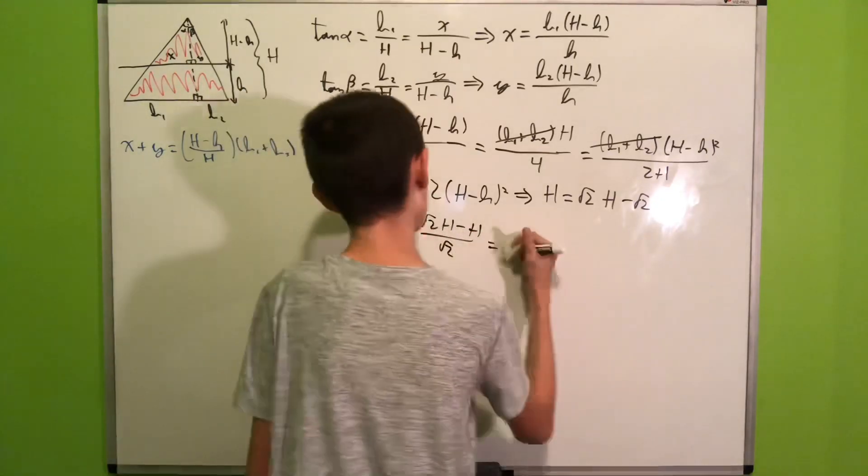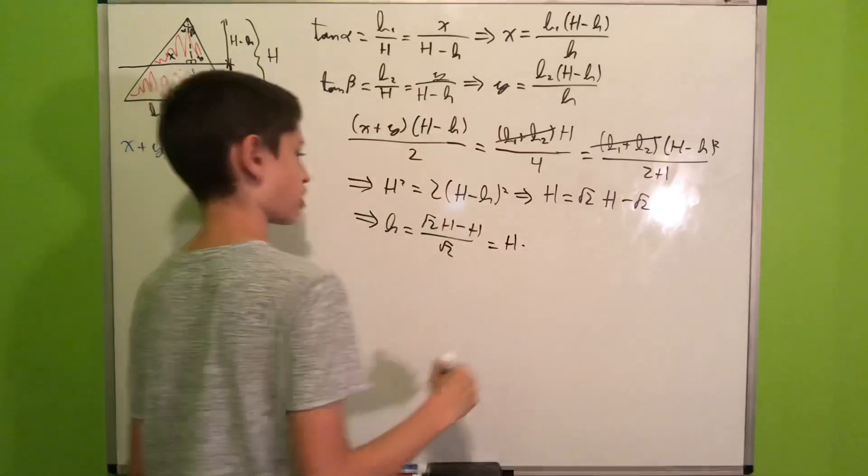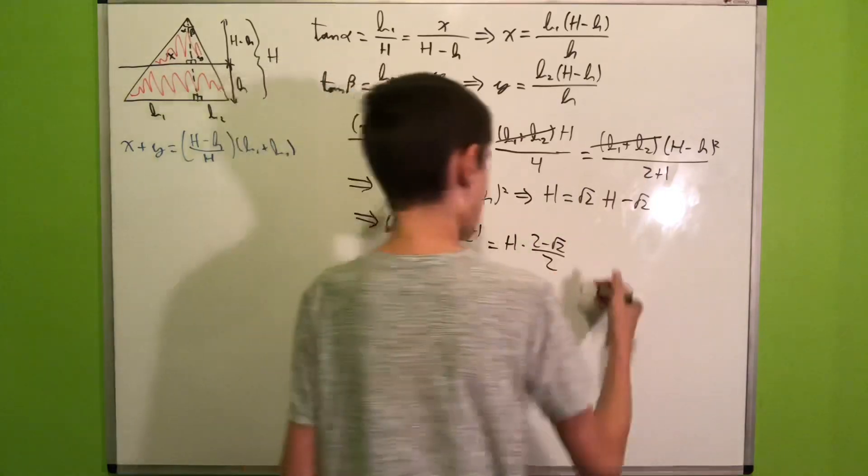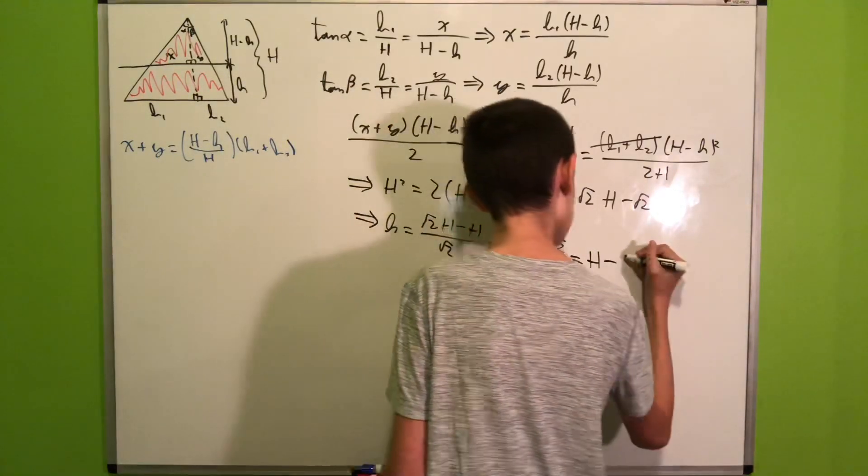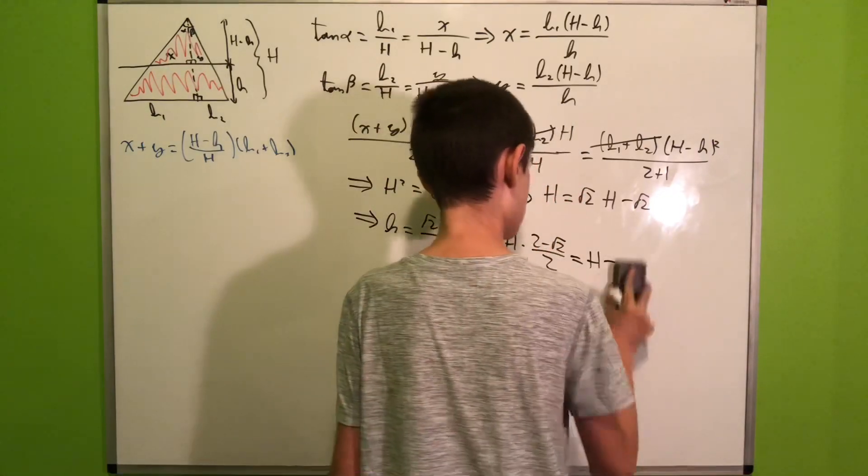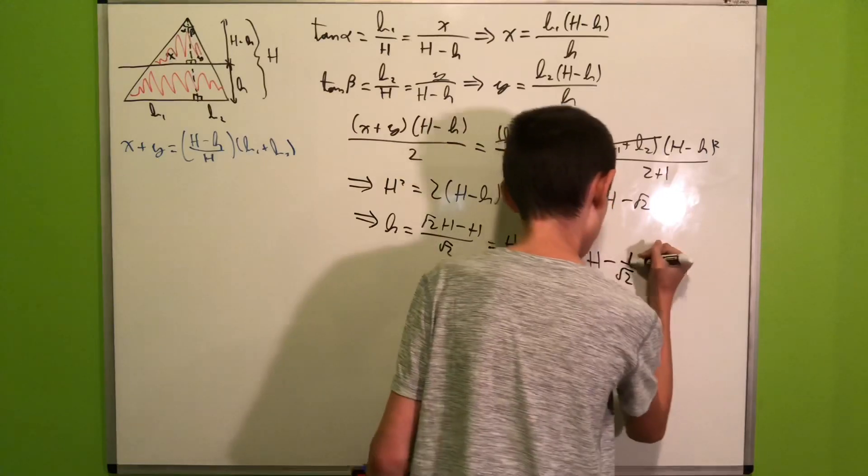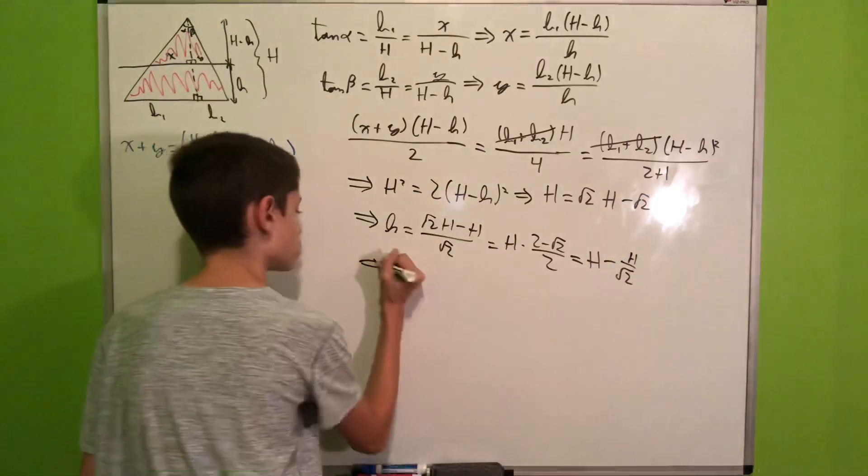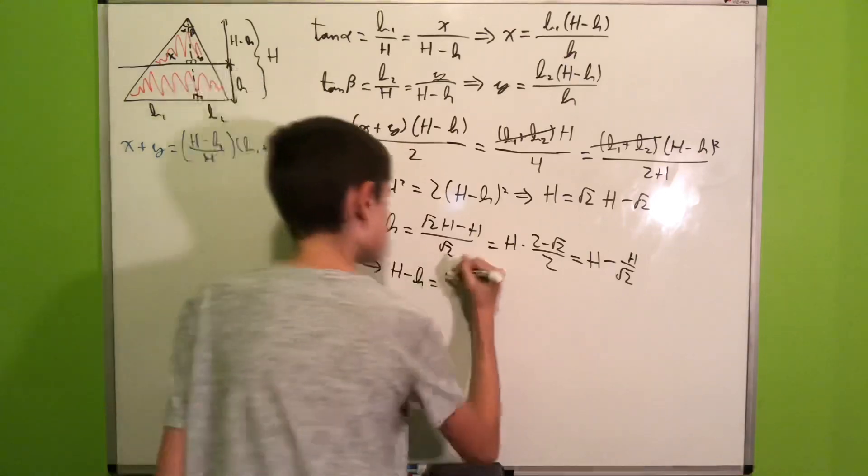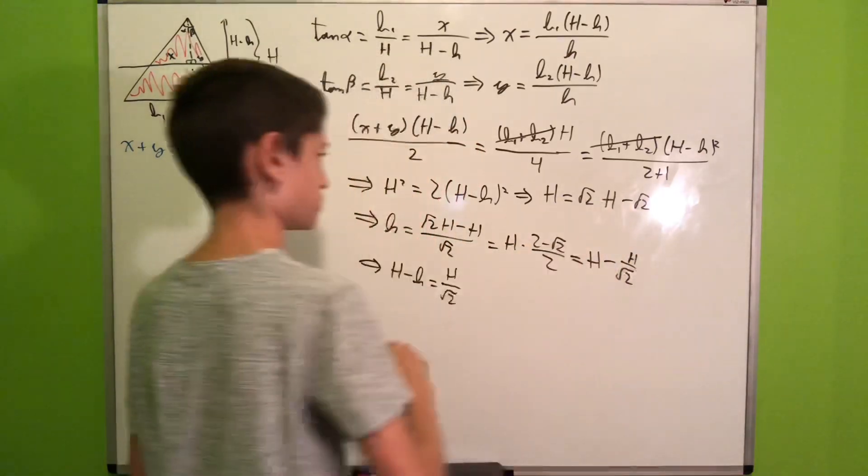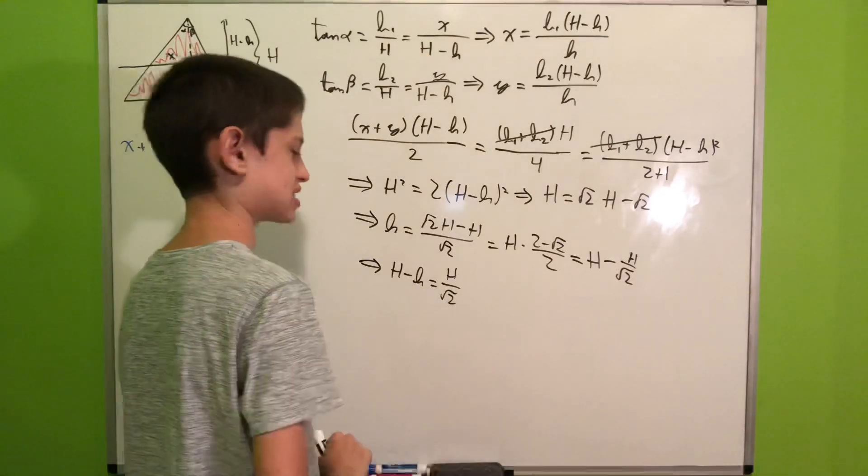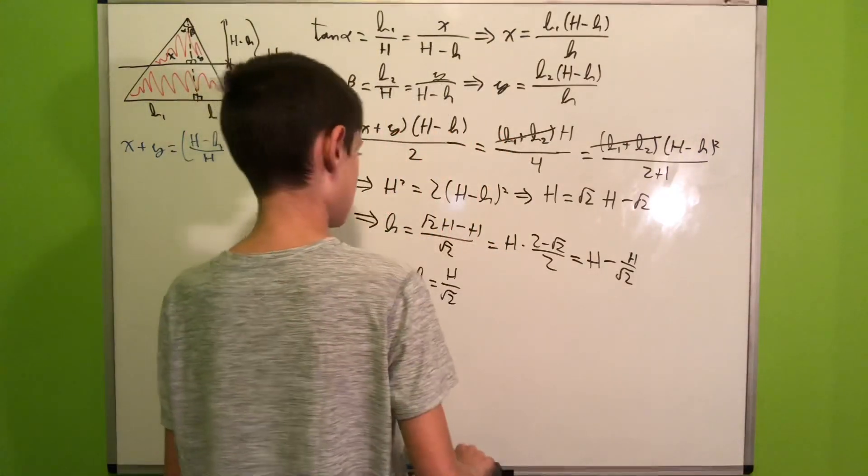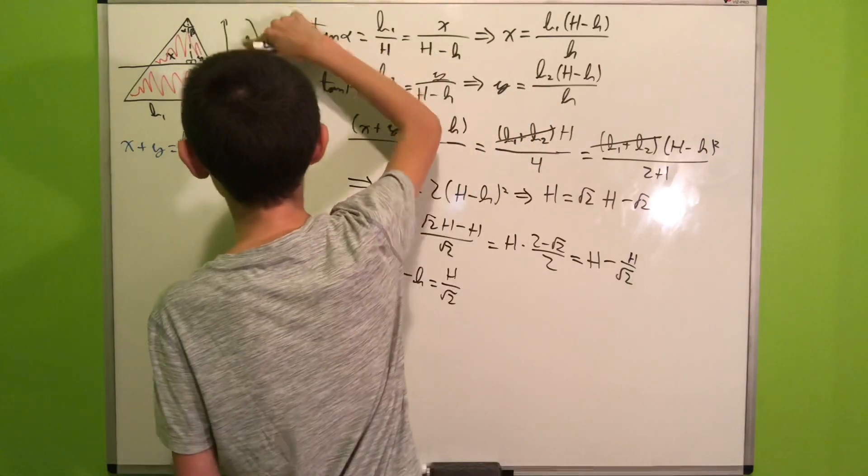Which is equal to H times (2 minus square root of 2) over 2. We can also rewrite this as H minus H over square root of 2. Then we can solve for H minus h to get that this is equal to H over square root of 2. I just realized we could have divided by 2 on both sides and found that much easier, but never mind.